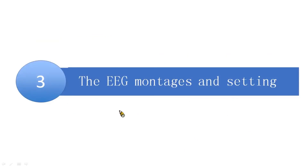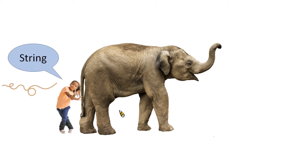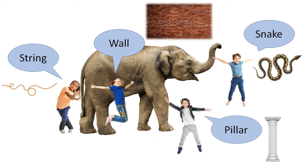The third topic is the EEG montage and setting. We all hear the story about blind people touching an elephant. The story tells us that if we don't understand the whole picture of one thing, we may make mistakes — even ridiculous ones.